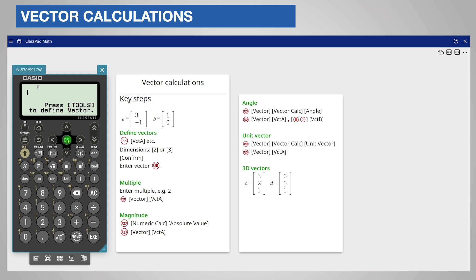From the home screen choose the vector app. First you need to enter the vector. Press the tools key and choose vector A, the first option.